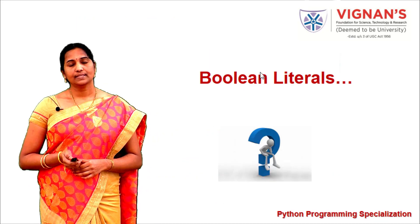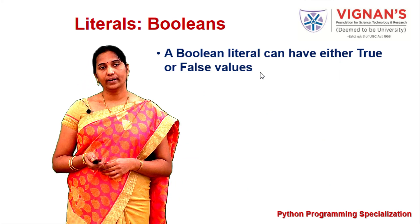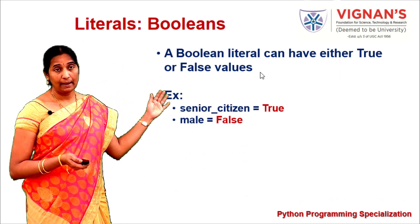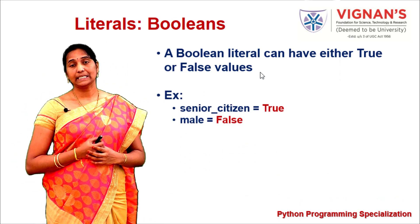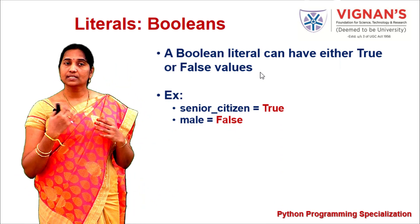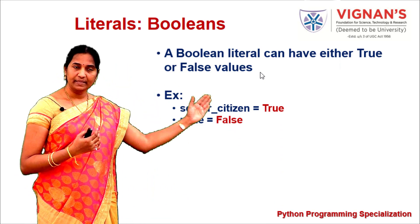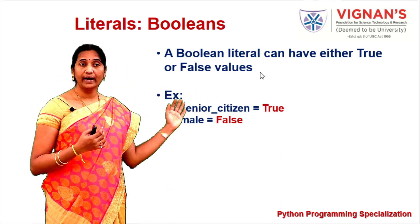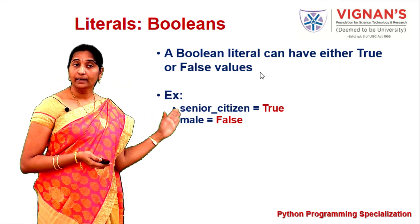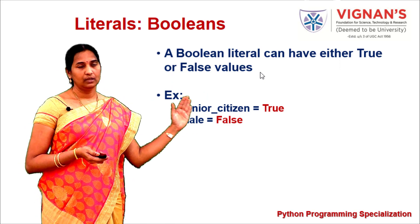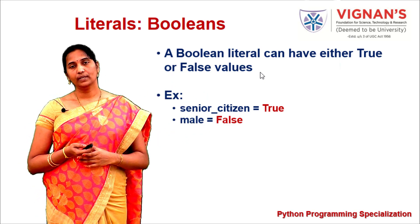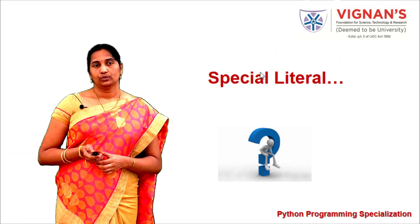Boolean literals represent true or false values. For example, senior_citizen can be assigned True, and male can be assigned False to indicate a female.